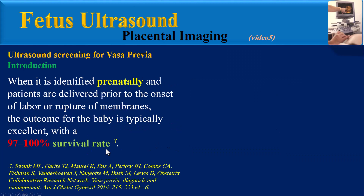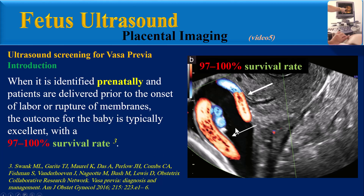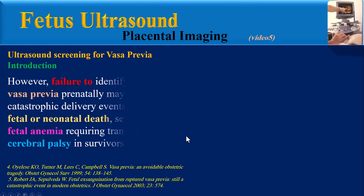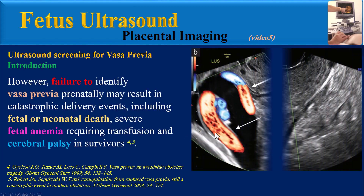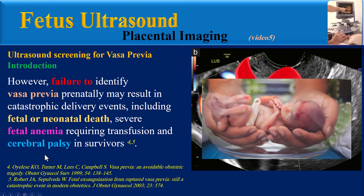When identified prenatally and patients are delivered prior to the onset of labor or rupture of membranes, the outcome for the baby is typically excellent with a 97 to 100% survival rate. However, failure to identify Vasa Previa prenatally may result in catastrophic delivery events, including fetal or neonatal death, severe fetal anemia requiring transfusion, and cerebral palsy in survivors.